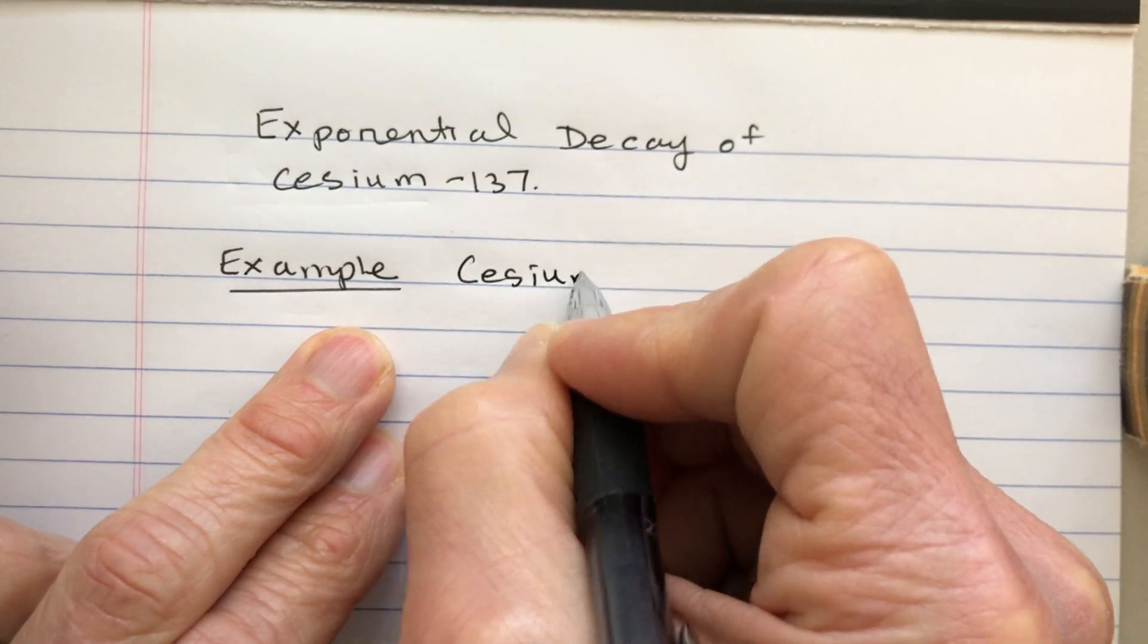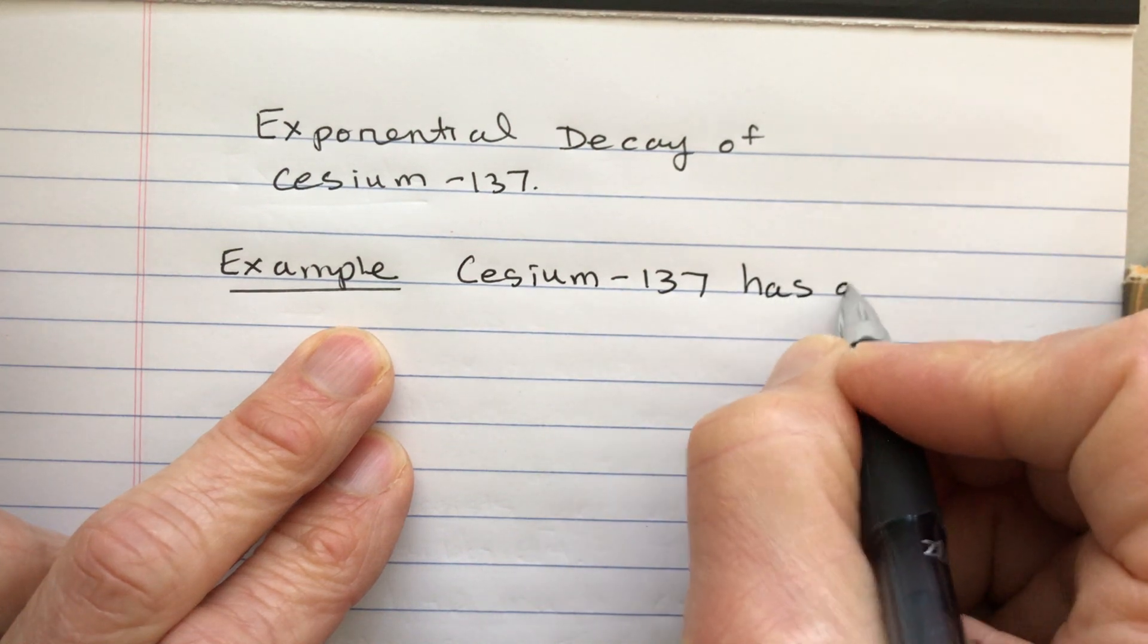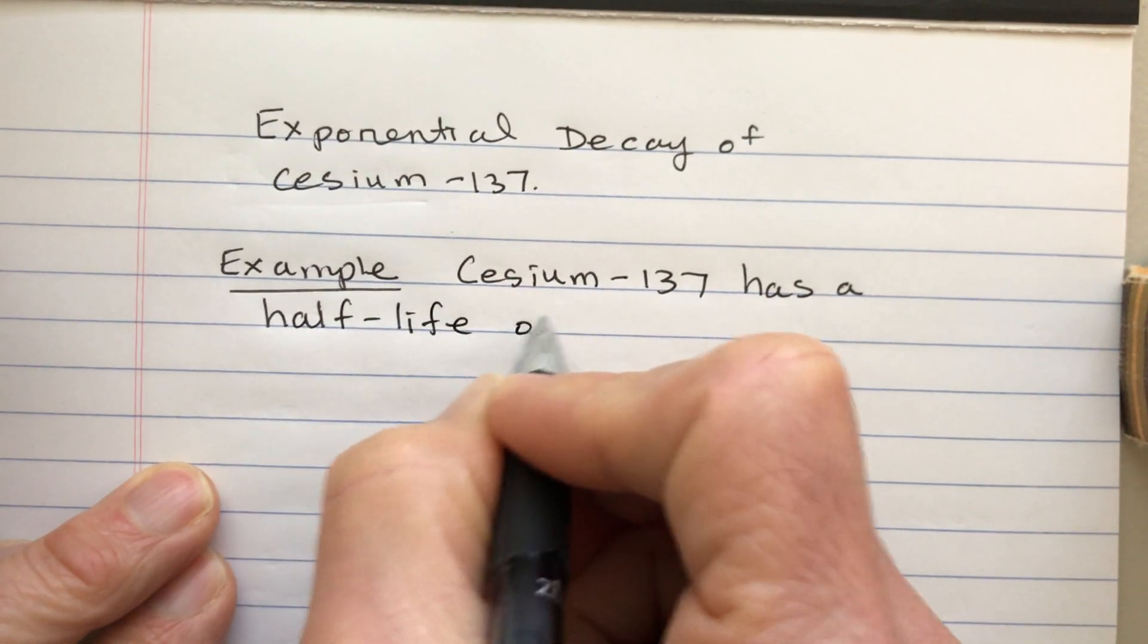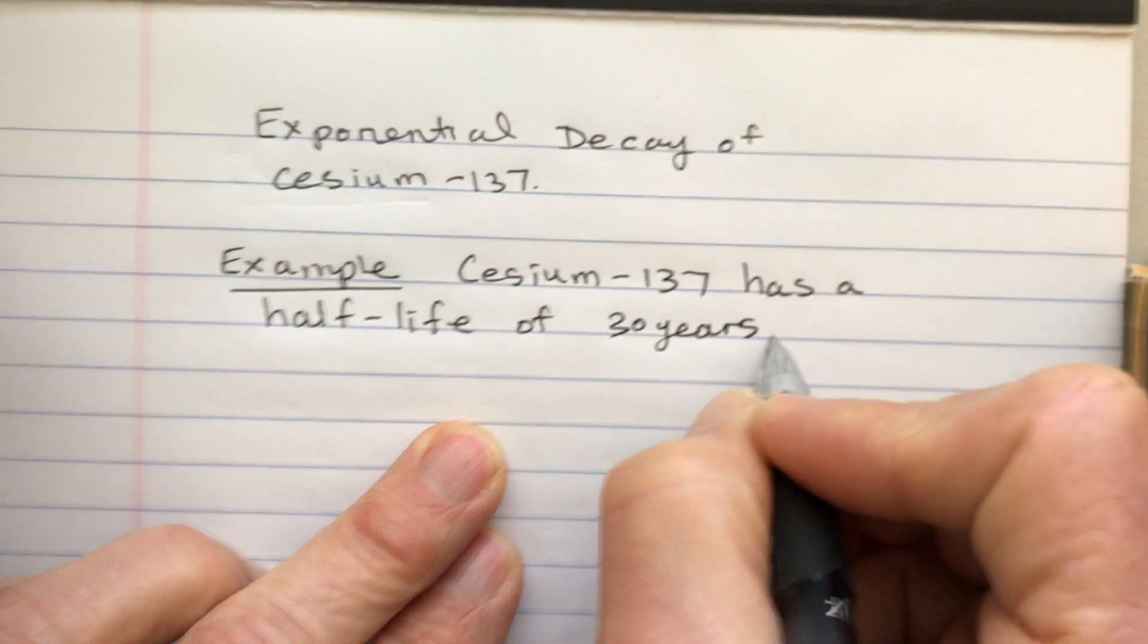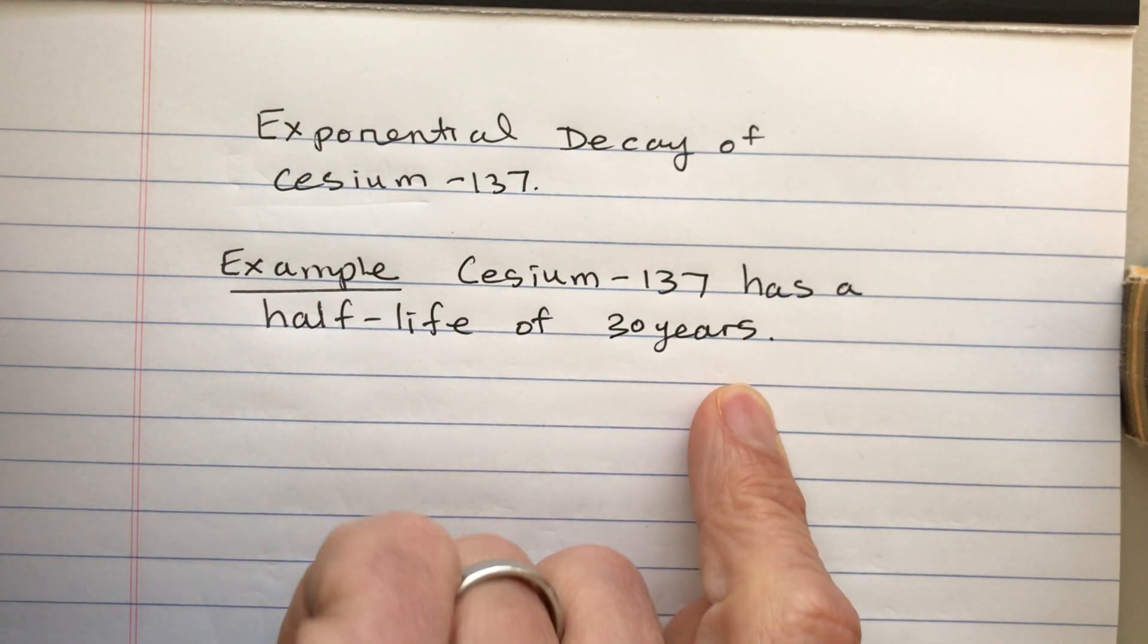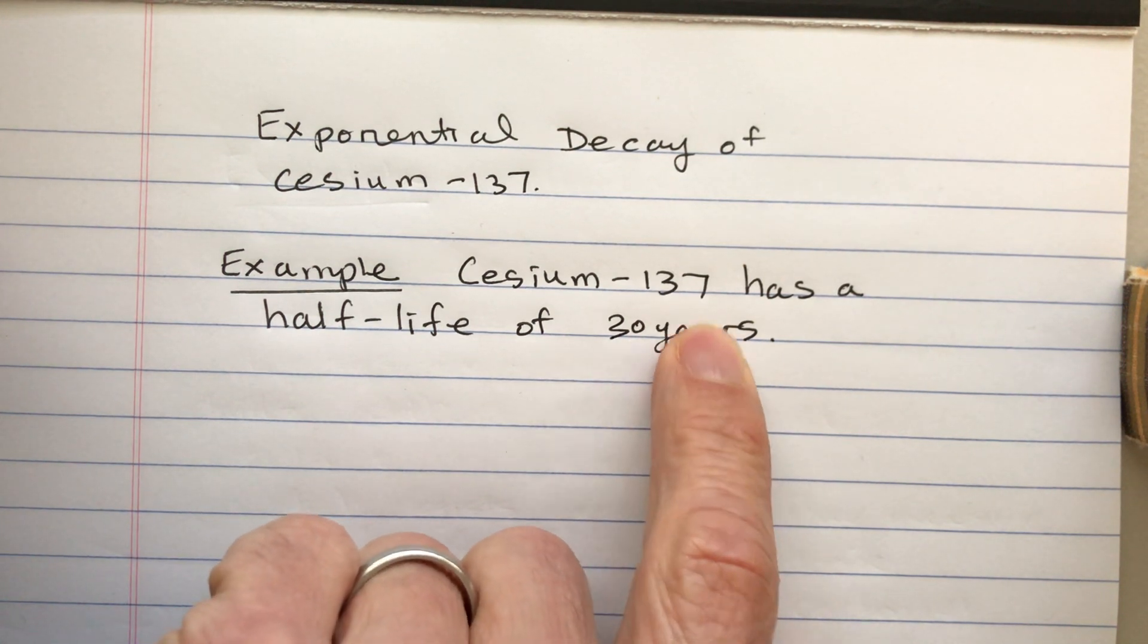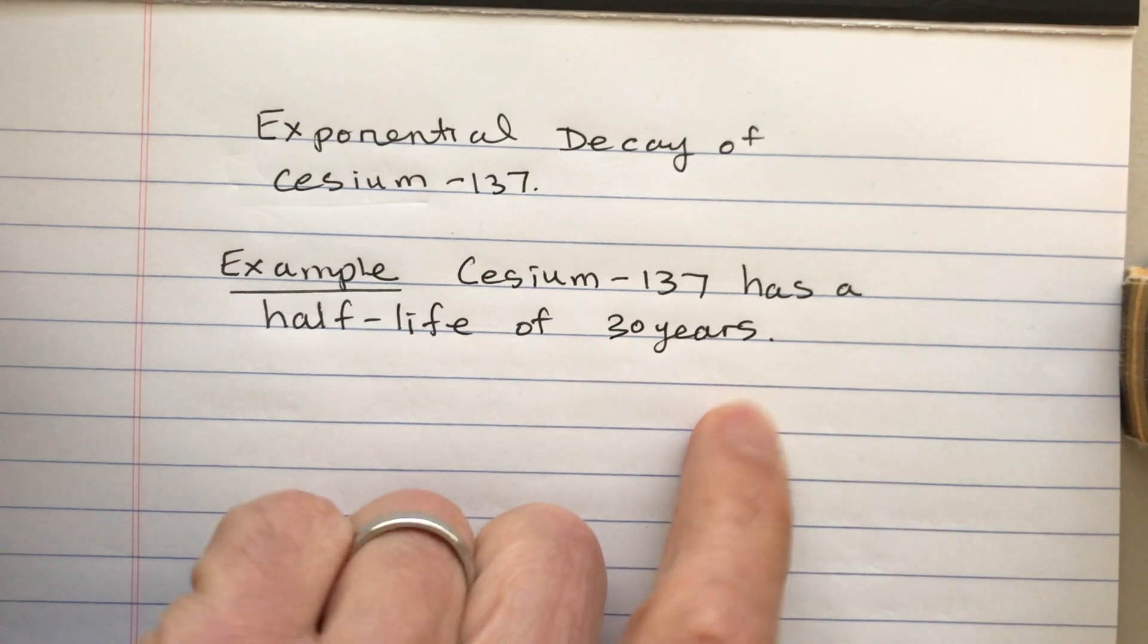Cesium-137 has a half-life of 30 years. I think this is one of the things that is part of the pollution from the nuclear reactor in Fukushima where there was a disaster. Having this stuff around is terrible, it's my understanding.